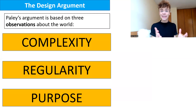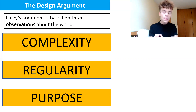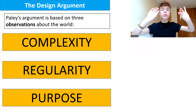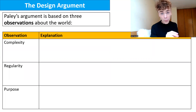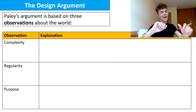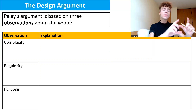These are the three things Paley observed — really important core AO1 knowledge. He observes complexity, regularity, and purpose. Remember, telos means purpose, so he is observing telos in the world, hence he creates a teleological argument. There are three observations Paley makes that we are going to break down further.